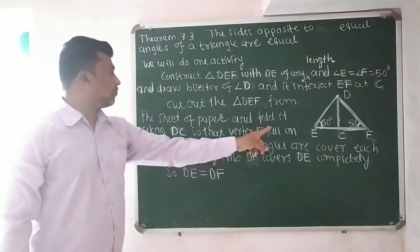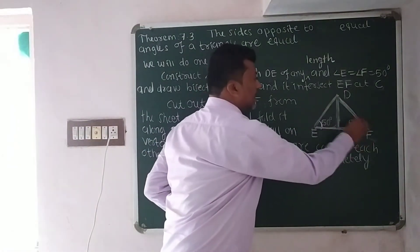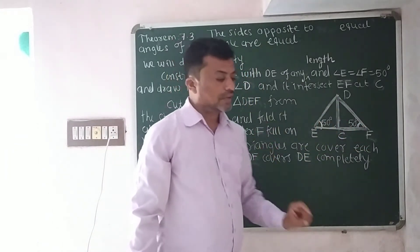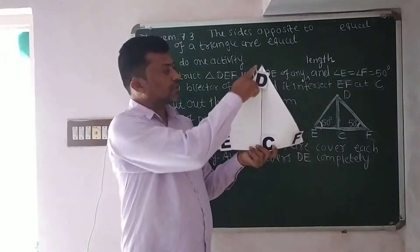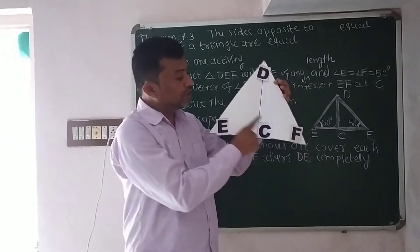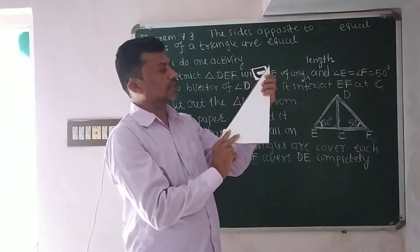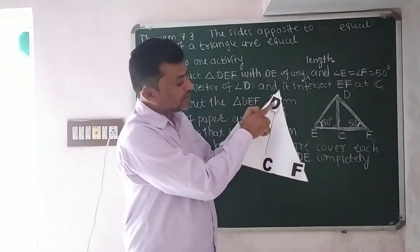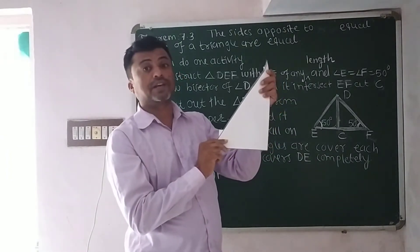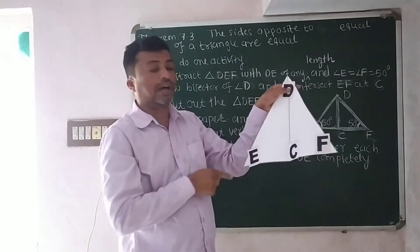After folding, vertex F falls on vertex E, and both triangles cover each other completely. DF also completely covers DE. Here is a physical model of triangle DEF with DC as the angle bisector of angle D. Now folding this triangle along line segment DC, we can see that line segment DF completely covers line segment DE.